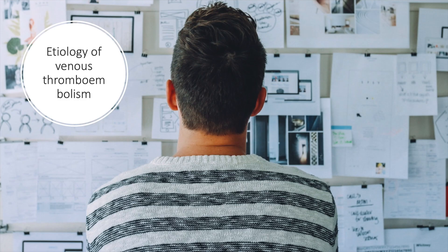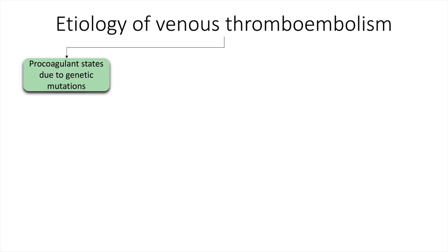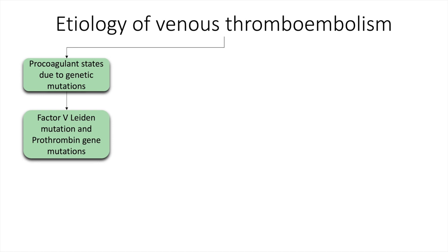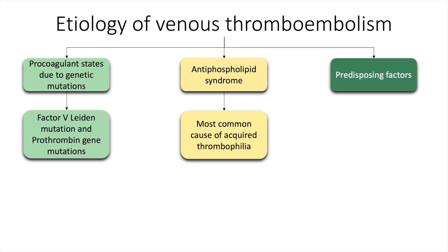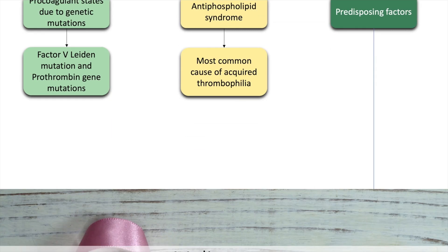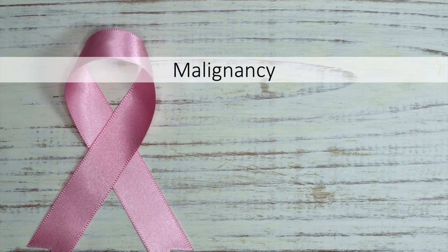The etiology of venous thromboembolism may include procoagulant states due to genetic mutations such as the factor V Leiden mutation and prothrombin gene mutations. Antiphospholipid syndrome is the most common cause of acquired thrombophilia. There could also be predisposing factors such as malignancy.